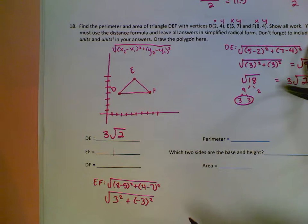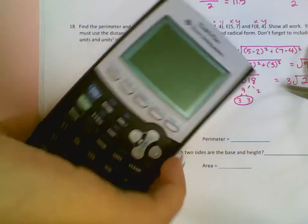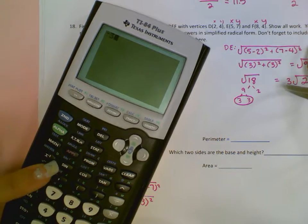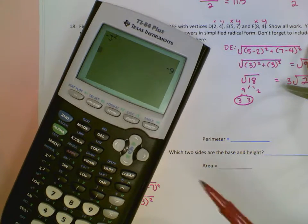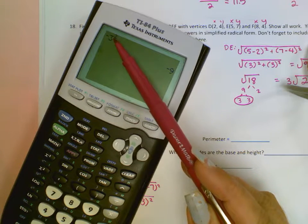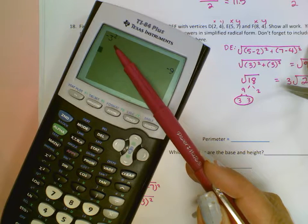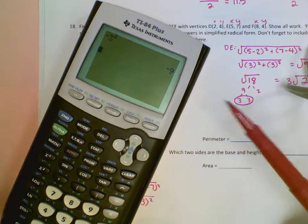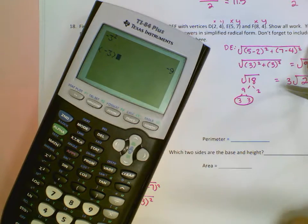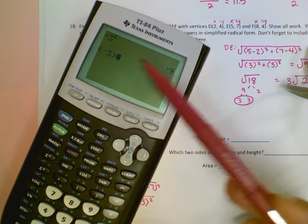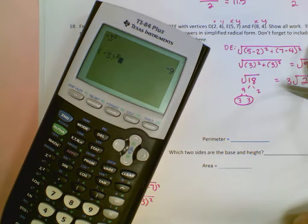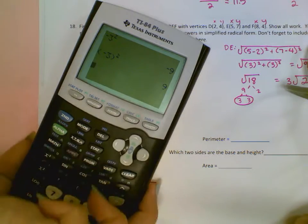8 minus 5 is 3, and 4 minus 7 is going to be negative 3. If I'm going to put this in my calculator, I need to make sure that negative 3 is in parentheses. If I don't, if I do negative 3 squared, by the order of operations, my calculator did the exponent first, which is squared of 3, and then added the negative at the end. But if I put negative 3 in parentheses, I'm saying negative 3, that whole thing, squared, which gives me my positive 9. Anything squared will be positive.